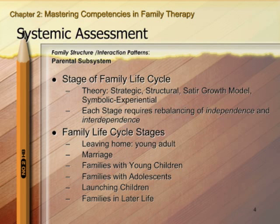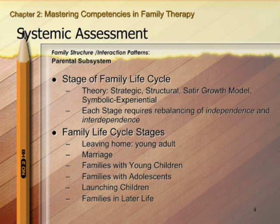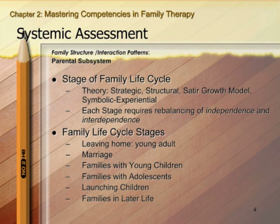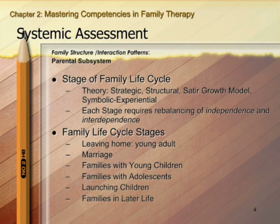Identifying where the family is in this cycle can be very helpful. For example, many families come in between the young children stage and the adolescent stage, and it can be very helpful to identify that this family is having difficulty transitioning. Parents who were very successful setting boundaries for young children may have much more difficulty transitioning to their children's growing need for independence, risk-taking, and asserting their identity as teenagers.